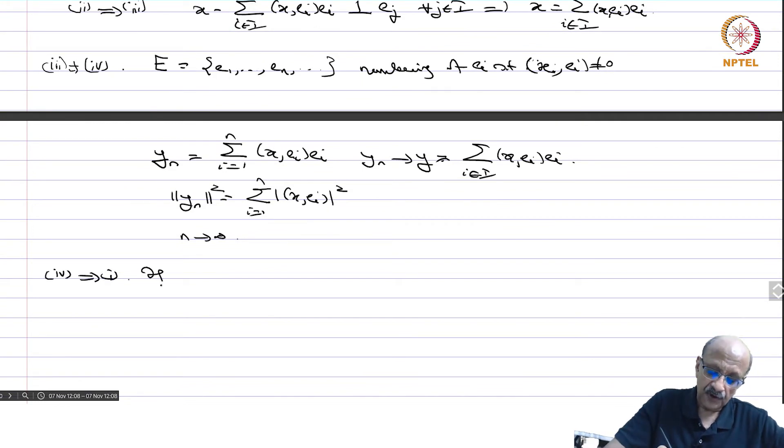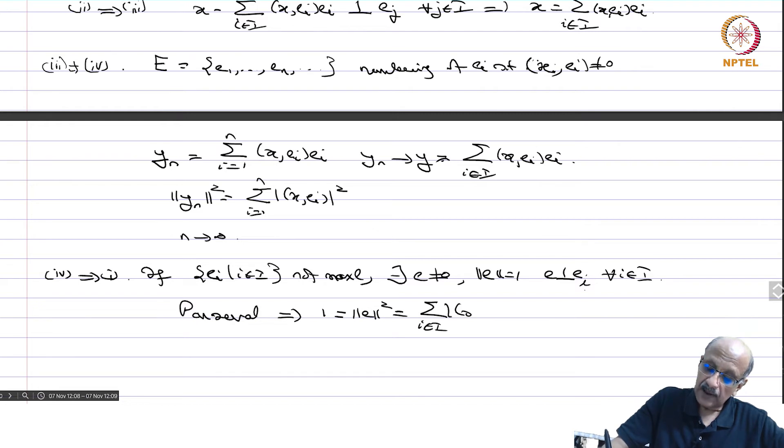4 implies 1. If EI, I in I not maximal, there exists E not equal to 0, norm E equal to 1 and E orthogonal to EI for all I in I. That is the contradiction of the maximality. But then by Parseval implies 1 which is norm E square equal to sigma i in I mod E EI square and that is 0 and that is a contradiction. This proves the theorem completely.